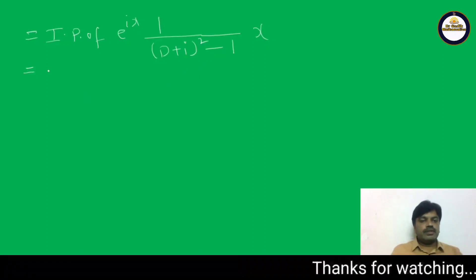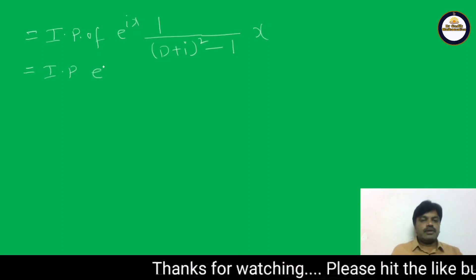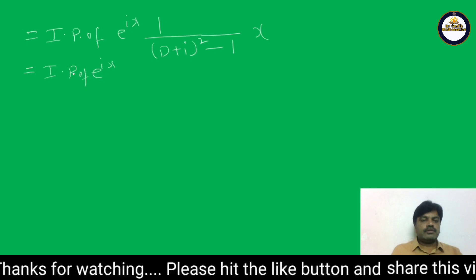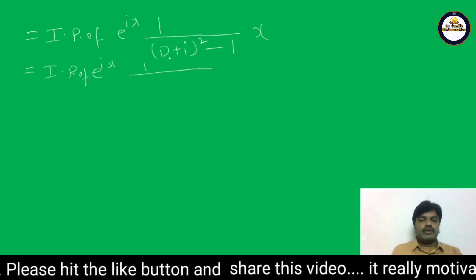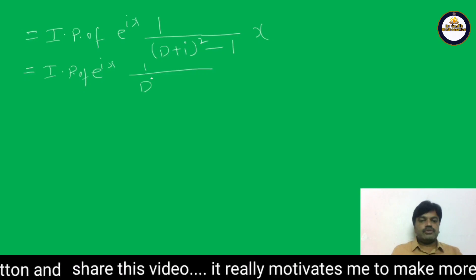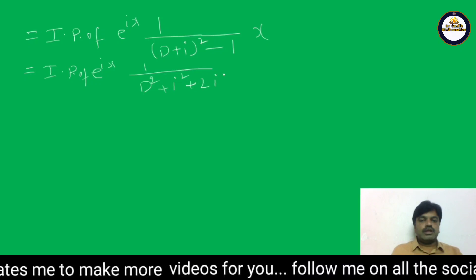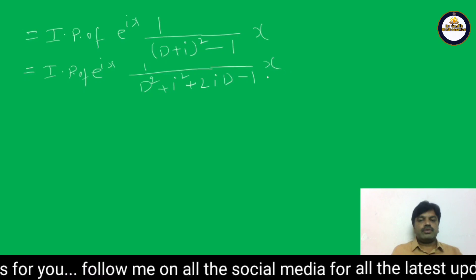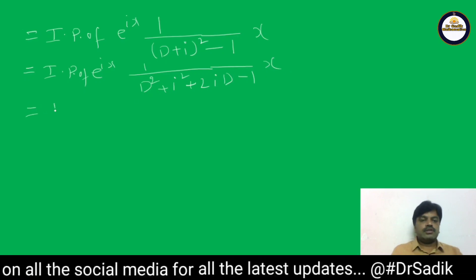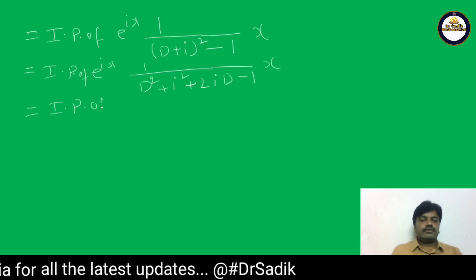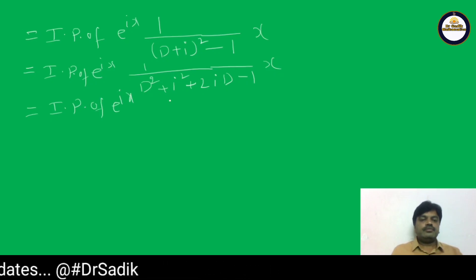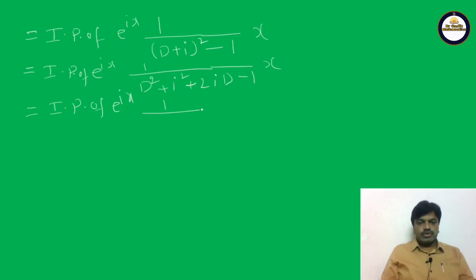Expanding (D+i)² - 1: we get D² + i² + 2iD - 1. Since i² = -1, this gives D² + 2iD - 1 - 1 = D² + 2iD - 2. So we have the imaginary part of e^(ix) · (1/(D² + 2iD - 2)) · x.